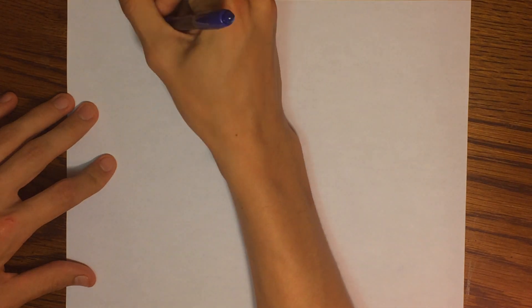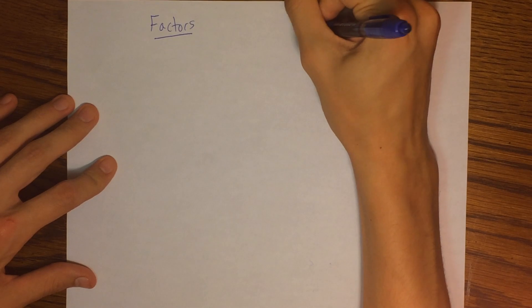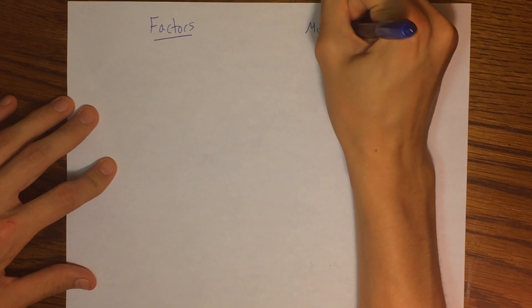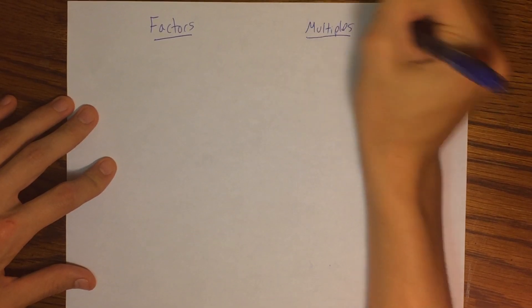In this video that supplements Mr. Volans' sixth grade math class, we are going to focus on one thing and one thing only. We're going to focus on distinguishing factors from multiples.